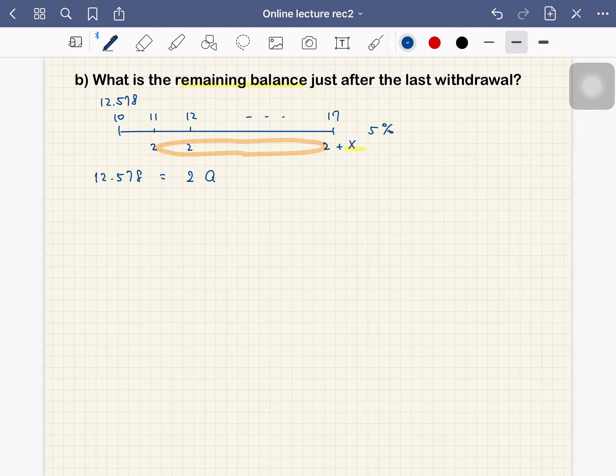And plus the present value of x. So present value of x is 1.05 to the power negative 7 times x. So this is the present value of x. So you can solve this for x.